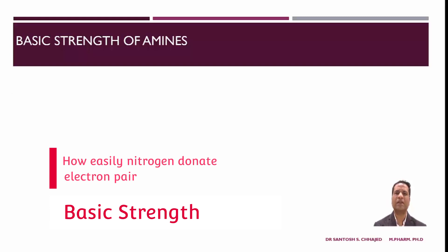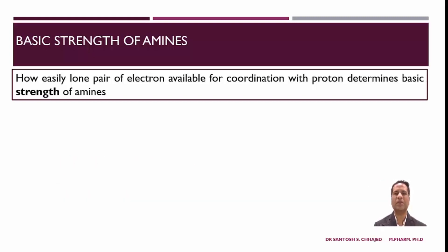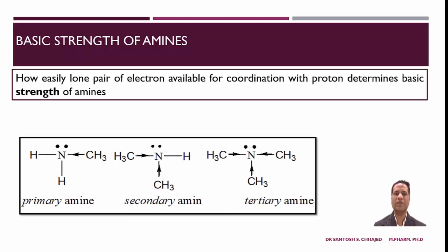The basic strength of amines — whether an amine is more or less basic — is defined by how easily the nitrogen of that amine shares its electron pair in a reaction. If nitrogen shares electrons very fast and becomes stabilized, the amine will be more basic. When these amines share electrons with an electrophile or H+ ion, the resulting quaternary nitrogen is stabilized by the inductive effect of methyl groups. In the case of a primary amine, only one alkyl group releases electrons, helping to disperse or reduce the intensity of positive charge on the nitrogen.